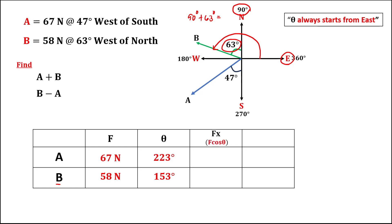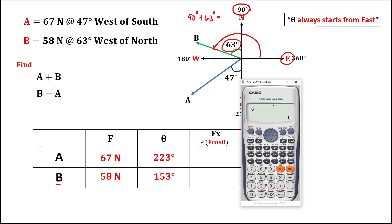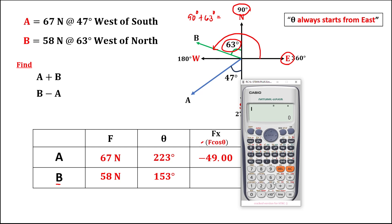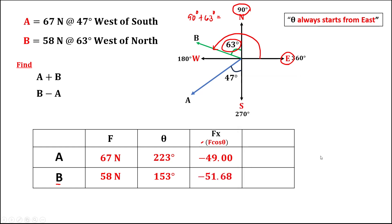We can now find the x-components for vectors A and B using this formula. For the x-component of vector A, we have the magnitude 67, then cosine of 223 degrees, giving us negative 49. For the x-component of vector B, the magnitude is 58 newtons, then cosine of 153 degrees, giving negative 51.68.